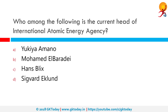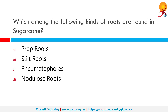Who among the following is the current head of the International Atomic Energy Agency? The IAEA was founded in 1957. It is also known as the world's 'Atoms for Peace' organization and is the international center for cooperation in the nuclear field. Its headquarters is in Vienna, Austria, and the present head is Yukiya Amano.